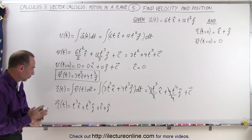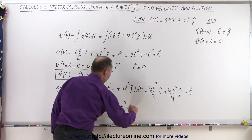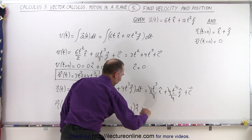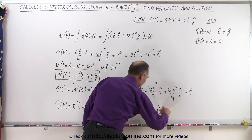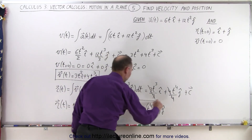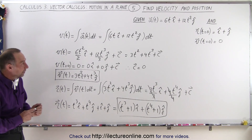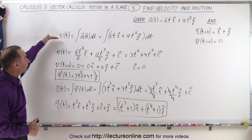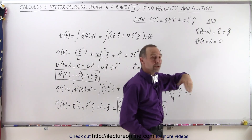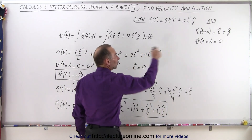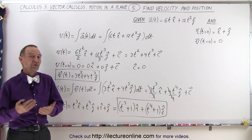Combining the i components and j components, the position vector is (t cubed plus 1) in the i direction plus (t to the fourth plus 1) in the j direction. This is our position vector, and 3t squared plus 4t cubed is our velocity vector. To summarize: to go from acceleration to velocity we integrate; to go from velocity to position we integrate again; and if we're given initial conditions, we can replace the constants with those values.